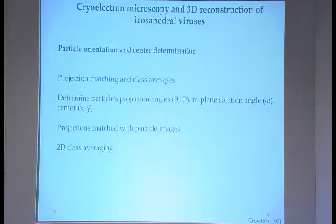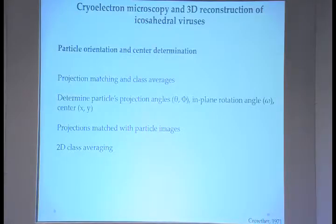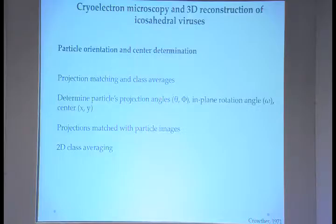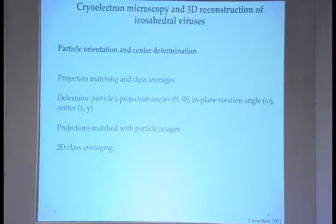For particle orientation and center determination, one way is projection matching and class averages — this requires a model. You take a model, orient it in different ways, and match your images to the back projections. You determine initial projection angles, the in-plane rotation angle, and center the particles. You then match projections with particle images, get 2D class averages, and generate a 3D structure, refining the projection angles to improve it.